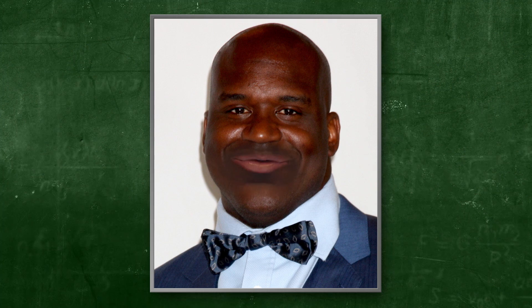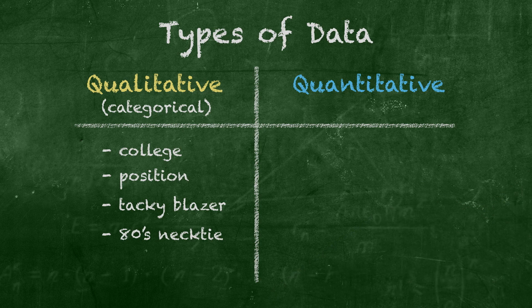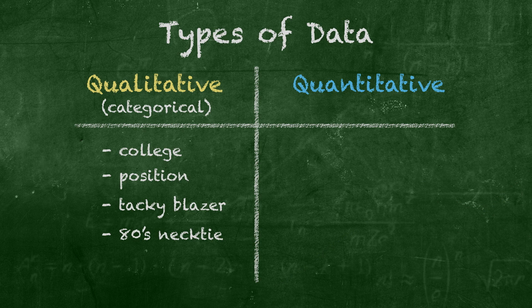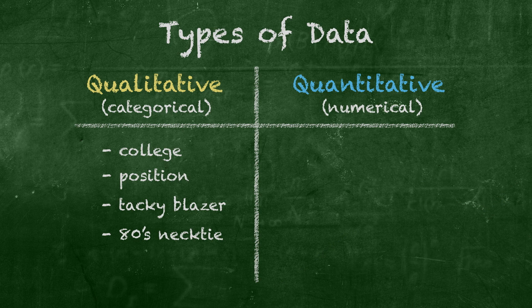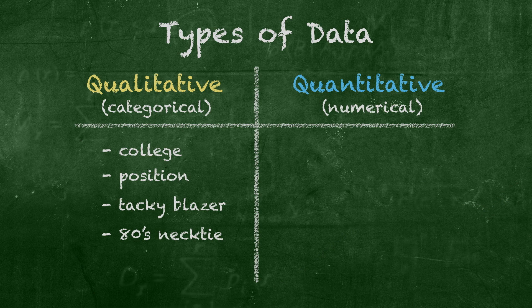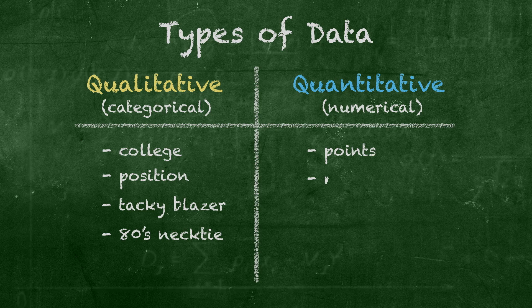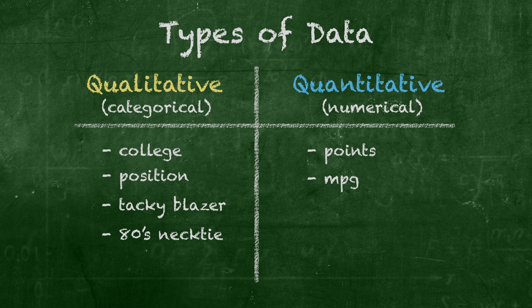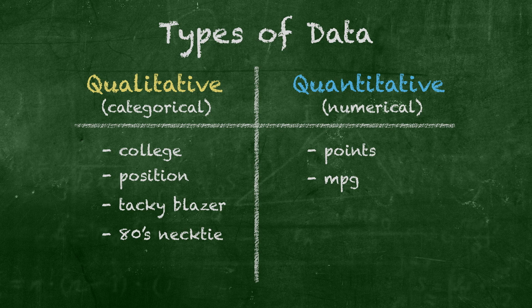With me so far? Well, we're each entitled to our opinion. Now with quantitative data, we're asking ourselves, are the data numerical? Quantitative data would include points scored or minutes played in a game, like 30 points or 40 minutes.